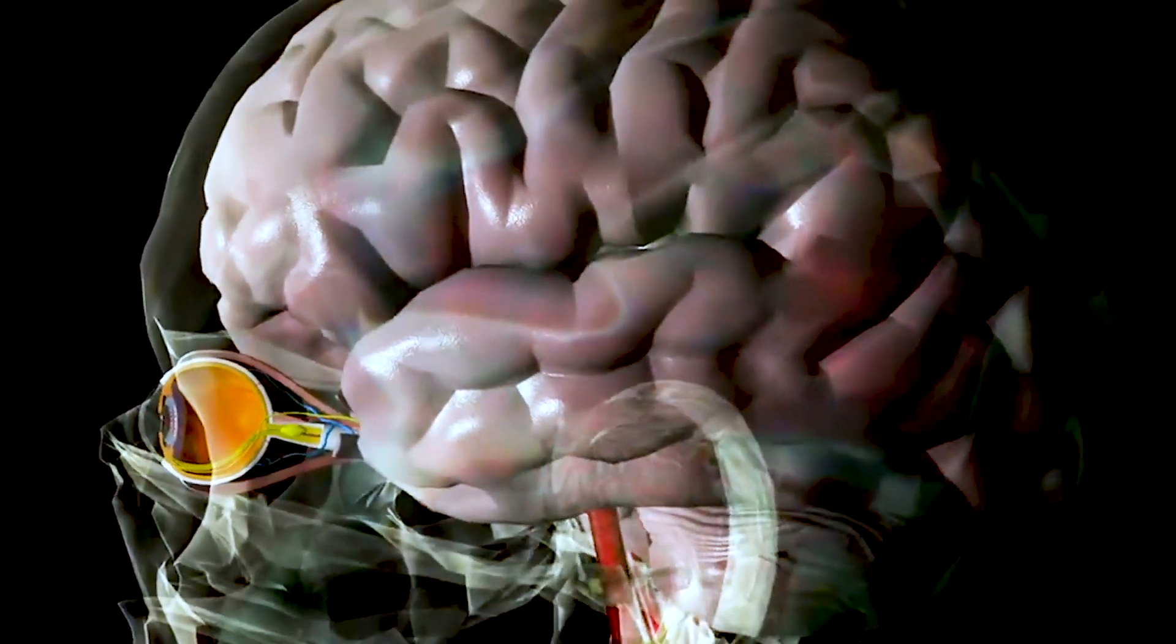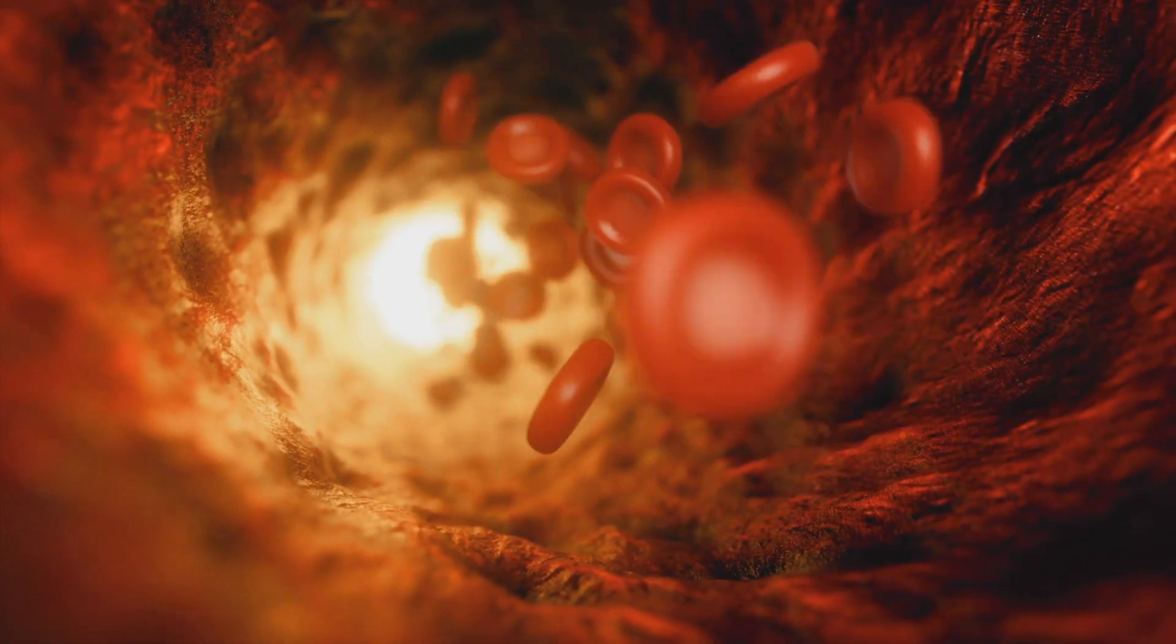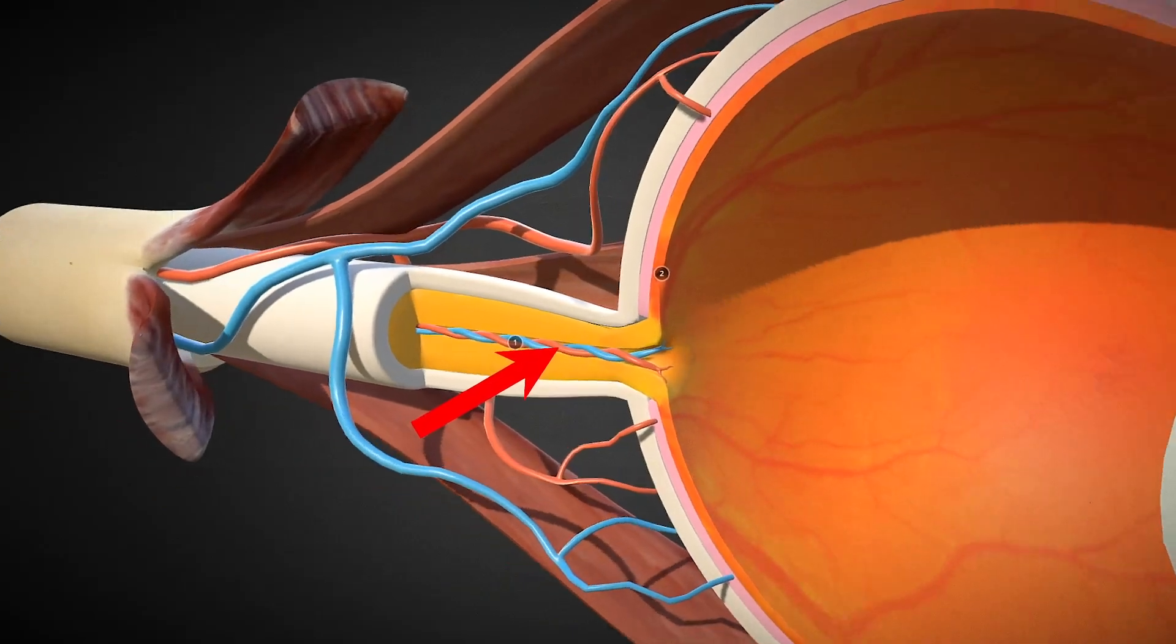The nerve impulse is then sent to the brain. Regarding the blood supply of our eye, oxygenated blood is supplied through ciliary arteries and central retinal artery.